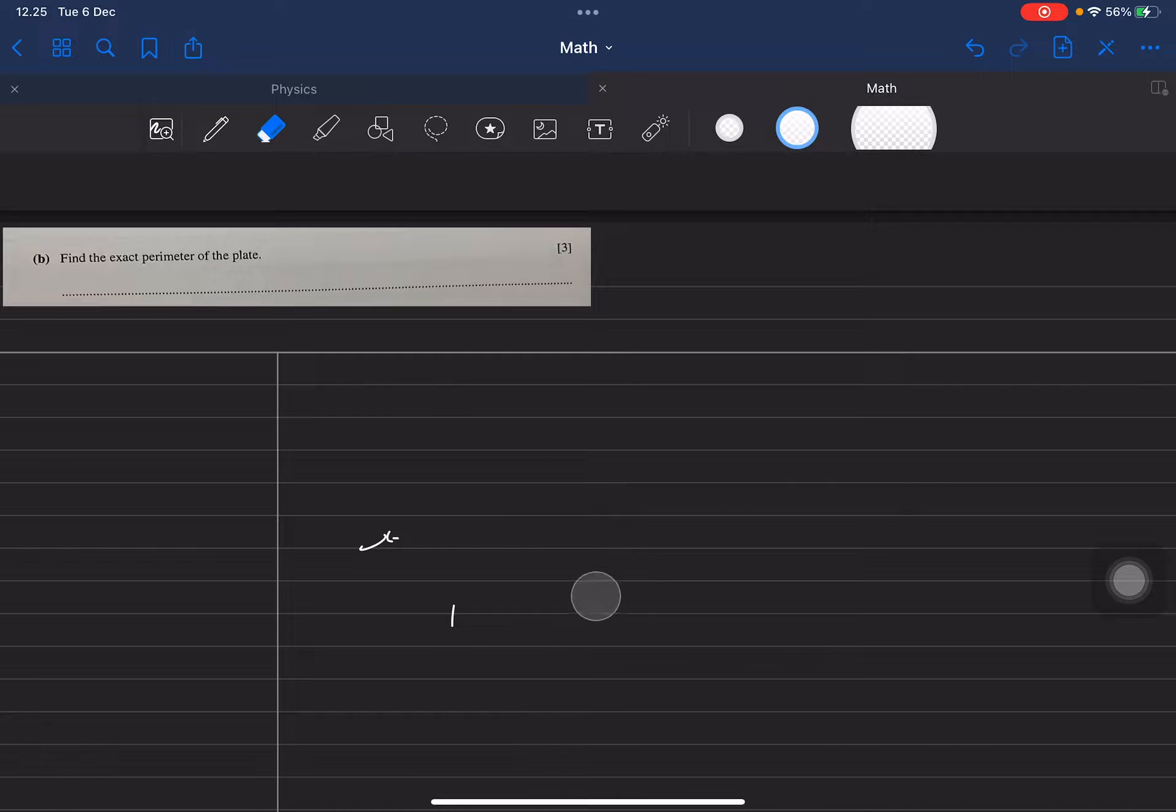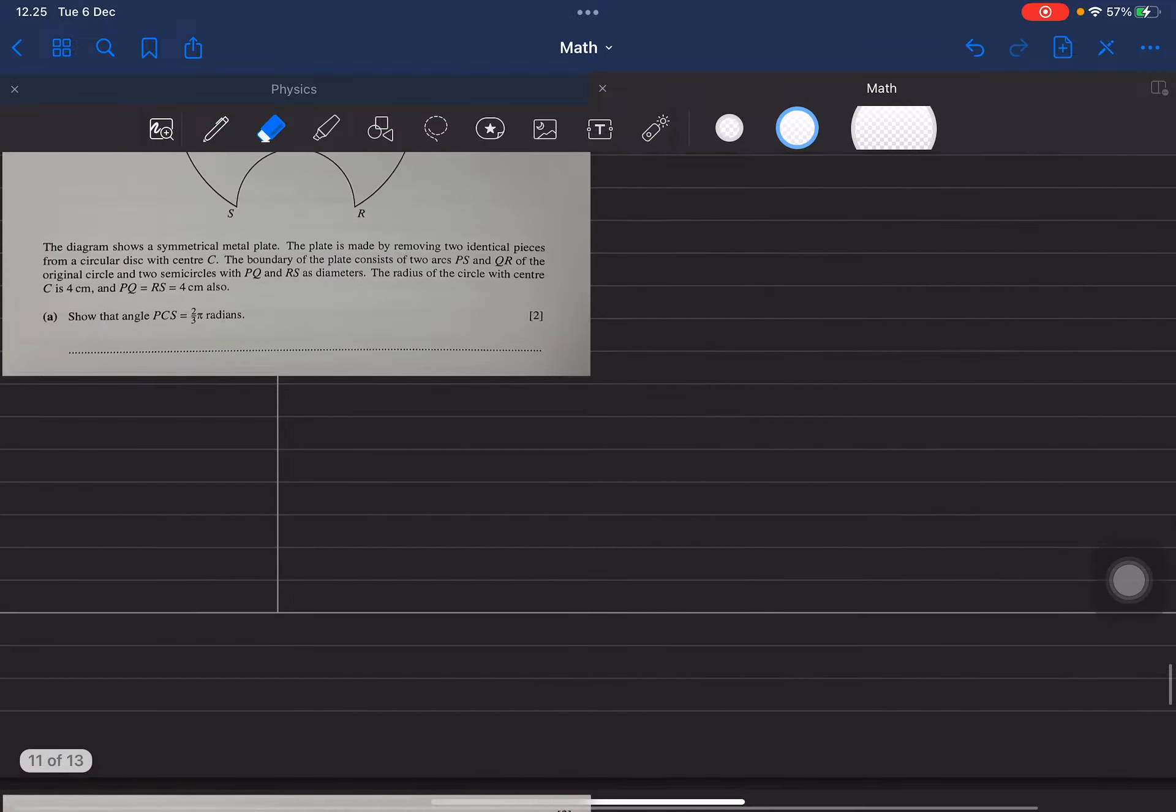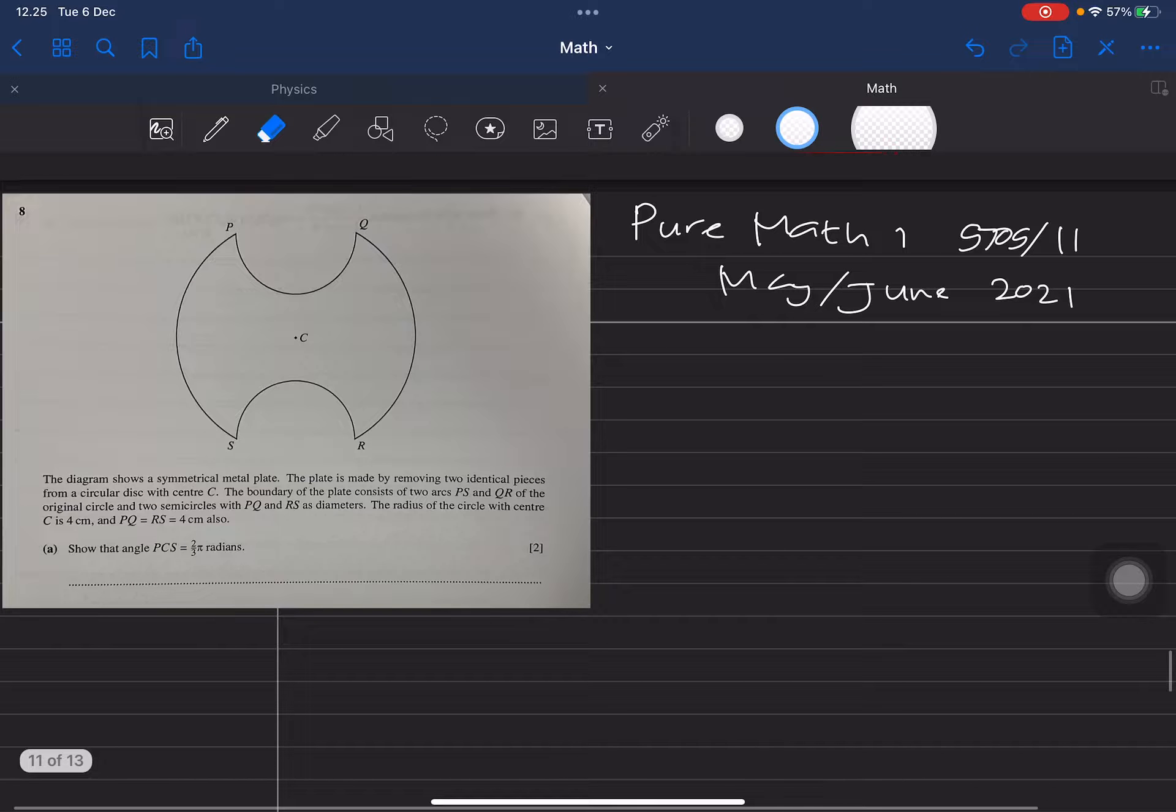This is how to solve this question. The diagram shows a symmetrical metal plate. The plate is made by removing two identical pieces from a circular disk with center C. The boundary of the plate consists of two arcs PS and QR of the original center and semicircles with PQ and RS as diameters.